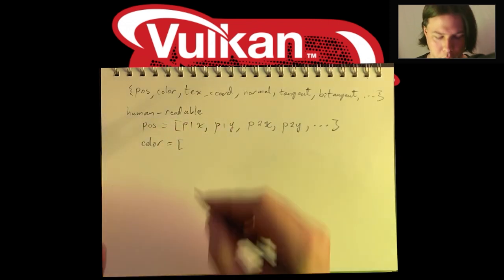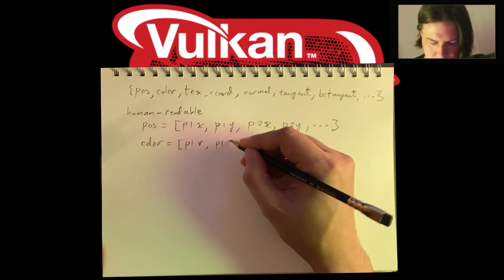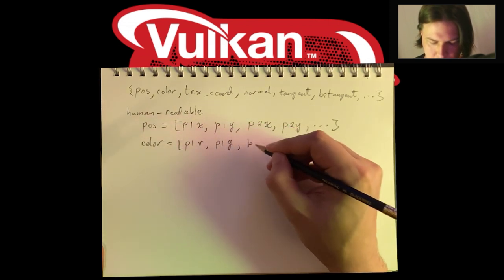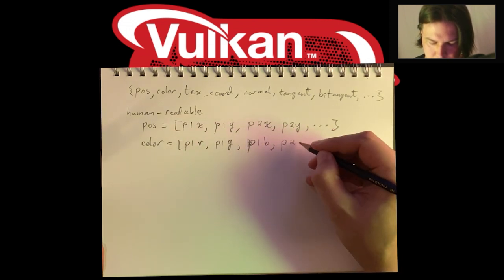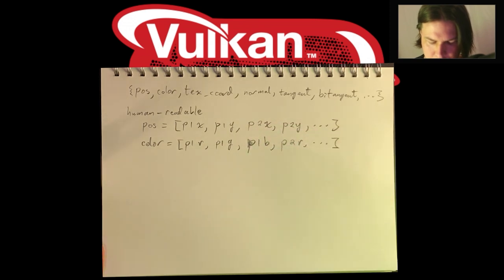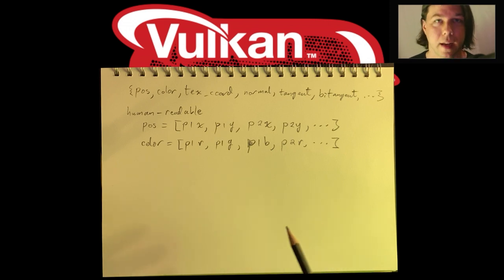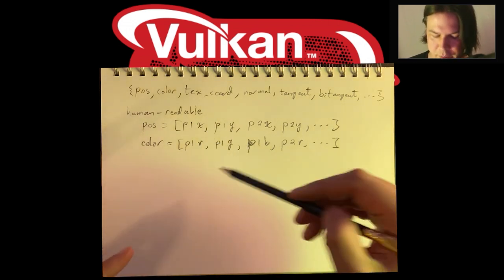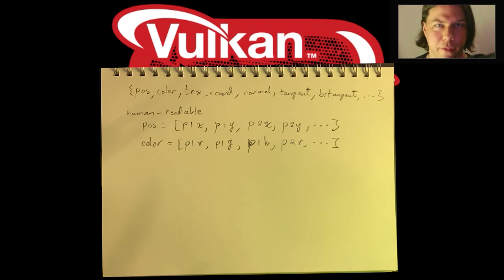Similarly, we have the color, specified point by point: point one red, point one green, point one blue, then on to point two red, and so on. This is a perfectly fine way to do things, but I don't quite like it. Although it's human readable, it's not very machine readable — it requires a lot of jumping around to stitch things together, and more critically, it creates two different vertex buffers.